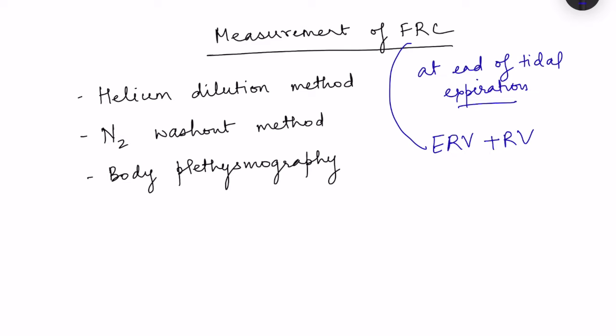Since residual volume cannot be exhaled out of the lungs, functional residual capacity cannot be measured using a spirometer, because the spirometer measures only the amount of air which is inhaled from or exhaled into it. If air is remaining in the lungs, it cannot be measured by spirometer. So there are various methods for measurement of FRC — these include the helium dilution method, nitrogen washout method, and body plethysmography.